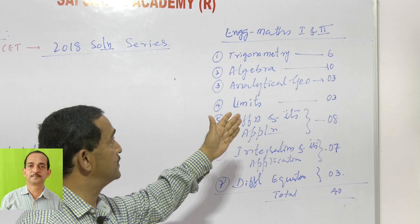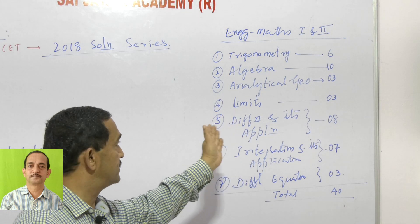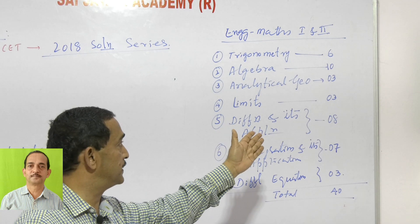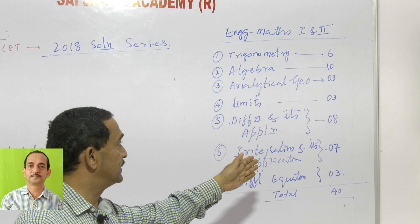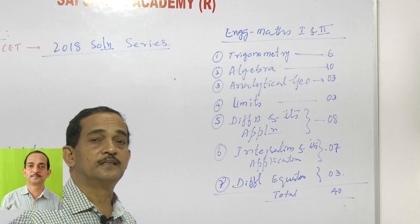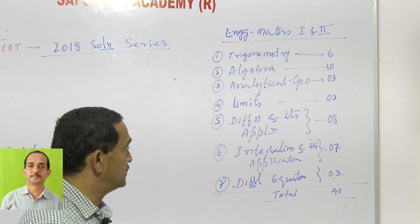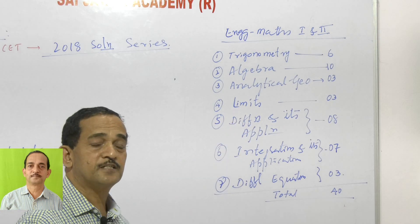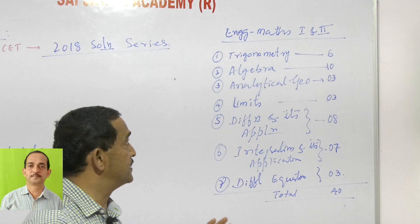In trigonometry 6 marks, algebra 10, analytical geometry 3, limits 3, differentiation and its application 8, integration and its application 7, and differential equations 3 marks questions. Totally there are 40 marks questions in this DCET pattern.